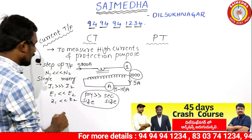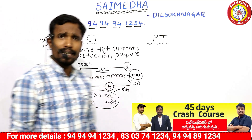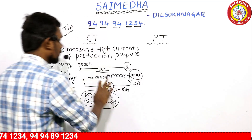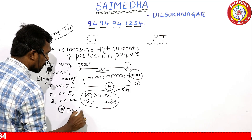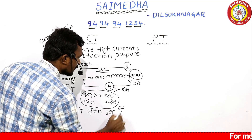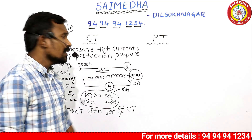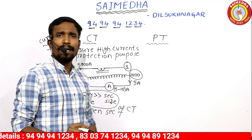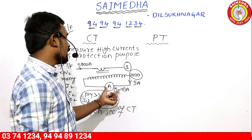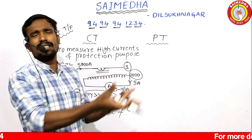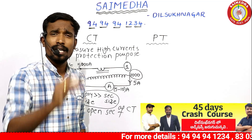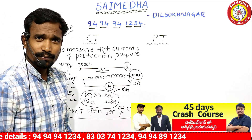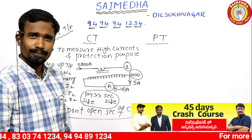Very important point — this was a question in SPDCL 2022: In a transformer, the high voltage winding is open-circuited and the high current winding is short-circuited. For CT, do NOT open the secondary. Always short-circuit the secondary of the CT; otherwise, very high voltages will be induced, causing winding and equipment damage.